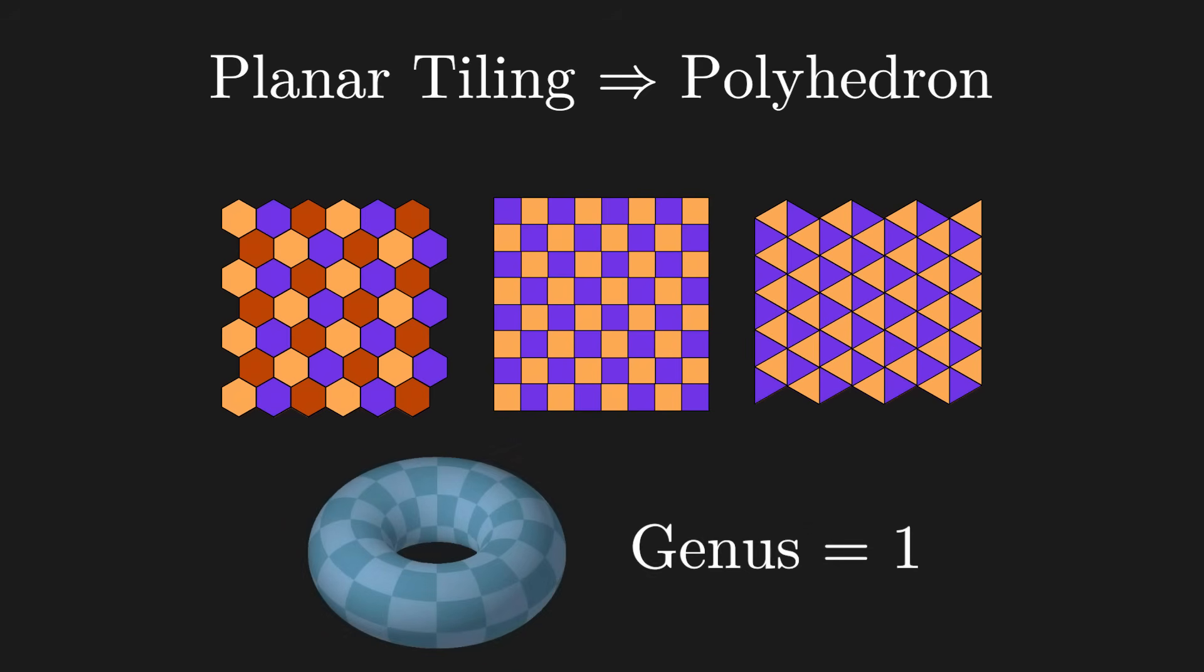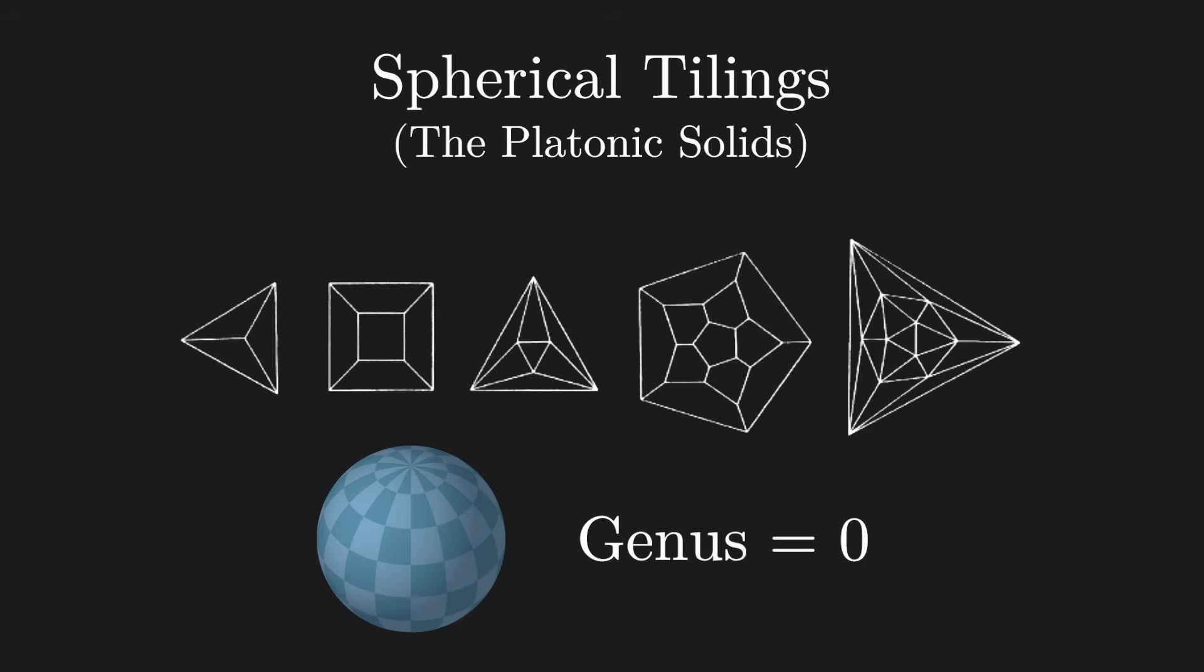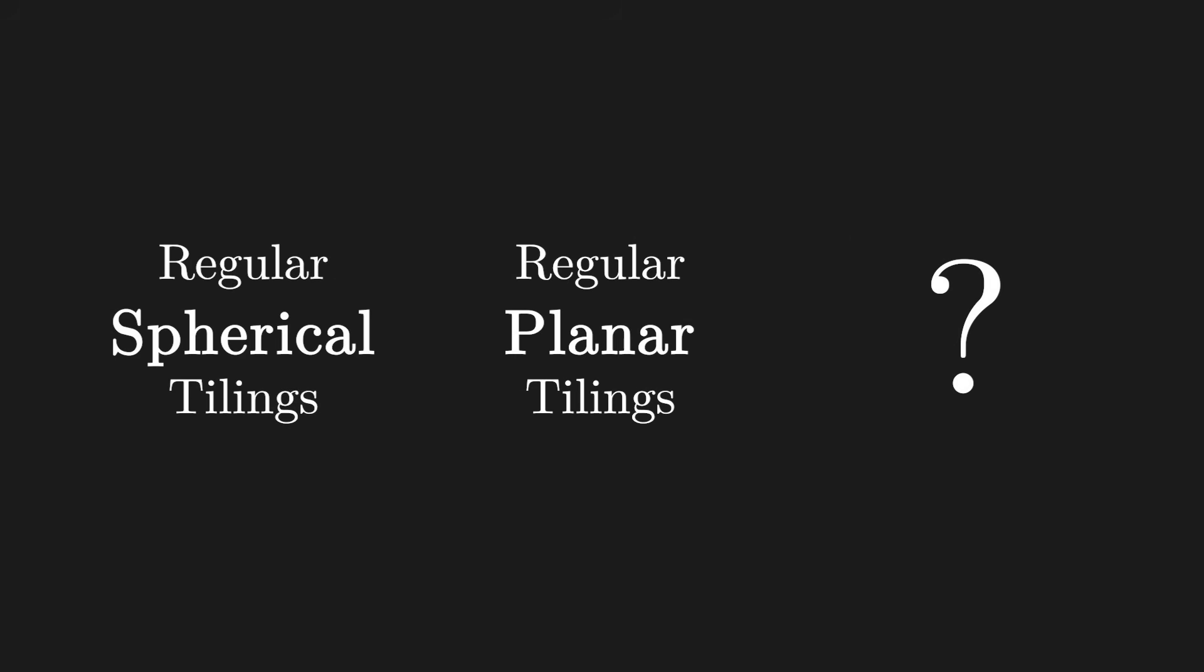Any repeated tiling on a flat plane like this will end up with a hole once we connect it together. So its genus, or number of holes, will be one. This is different from the spherical tilings which have genus zero, since they're topologically spheres. And maybe you see where I'm going with this. There's one more type of regular tiling.